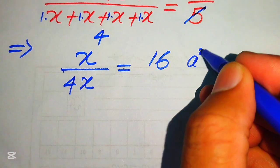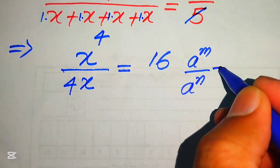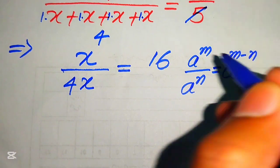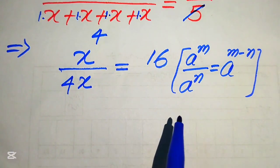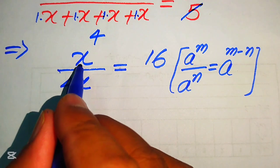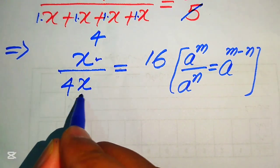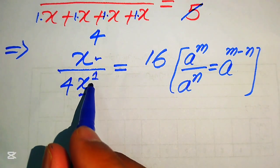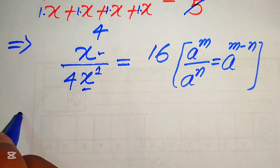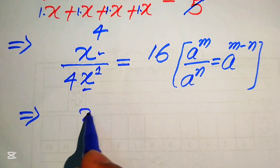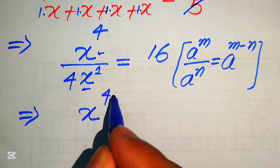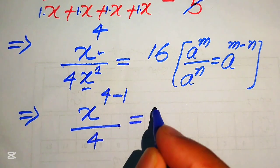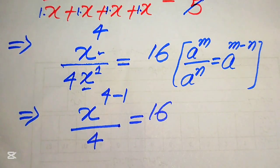Now in the next step we apply the exponent law: a to the power of m divided by a to the power of n equals a to the power of m minus n. According to this law, the base of both terms is the same, so we move the exponent in the denominator to the numerator. We write it as x to the power of 4 minus 1, divided by 4 only, and this whole expression equals 16.